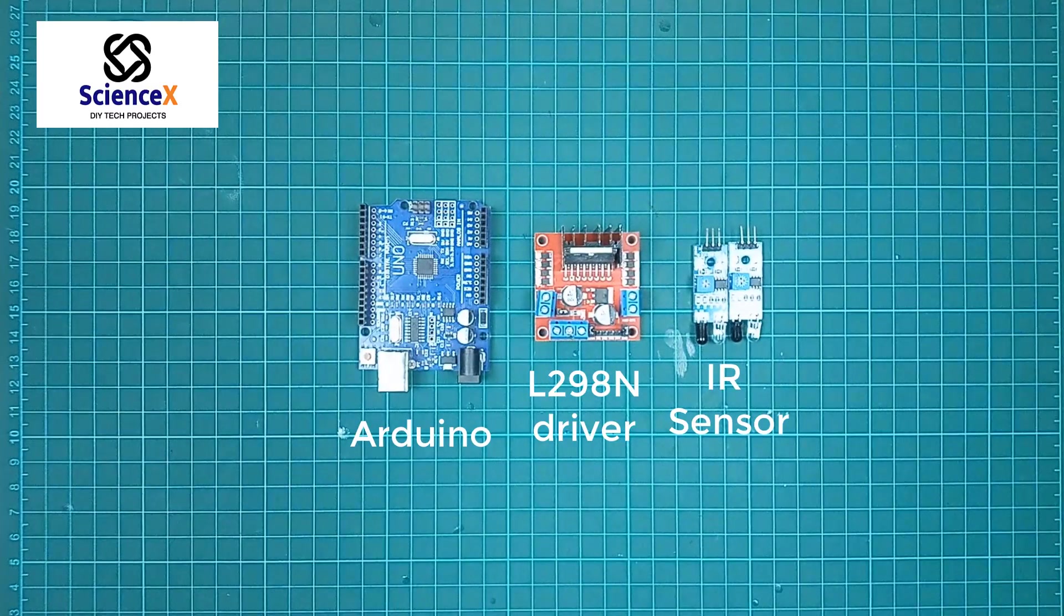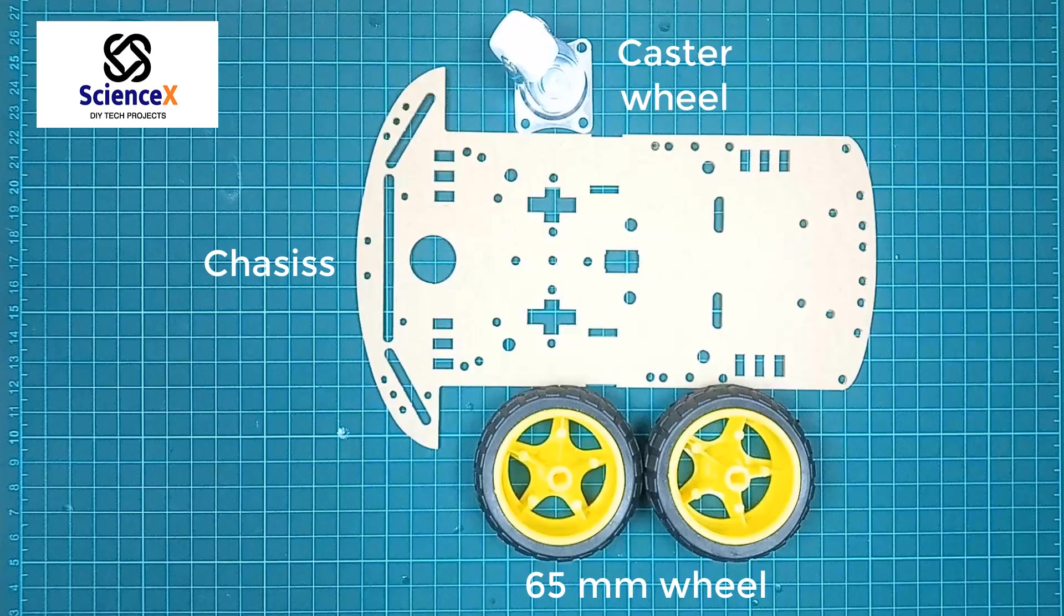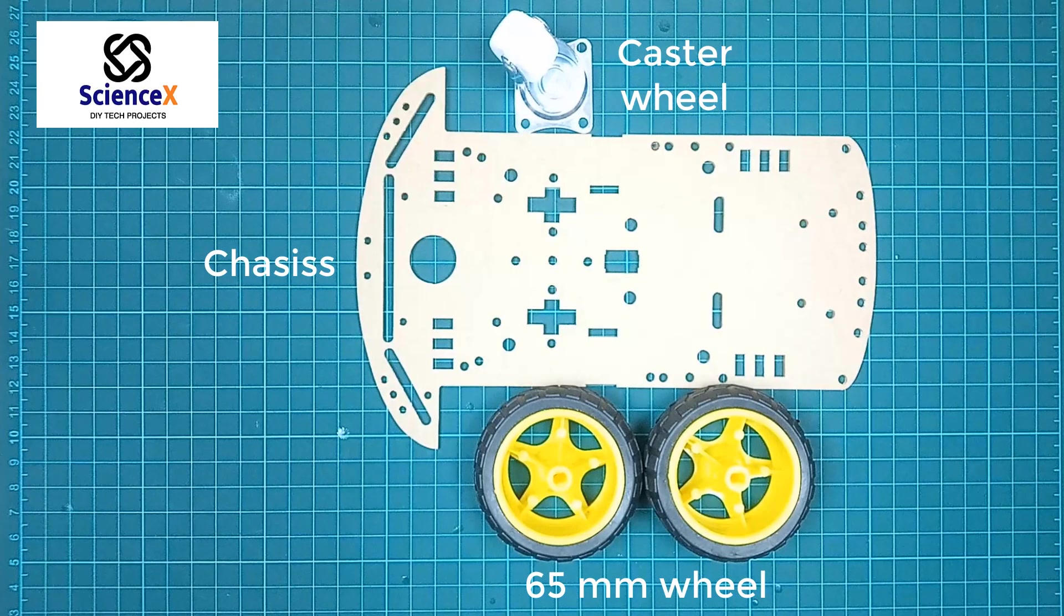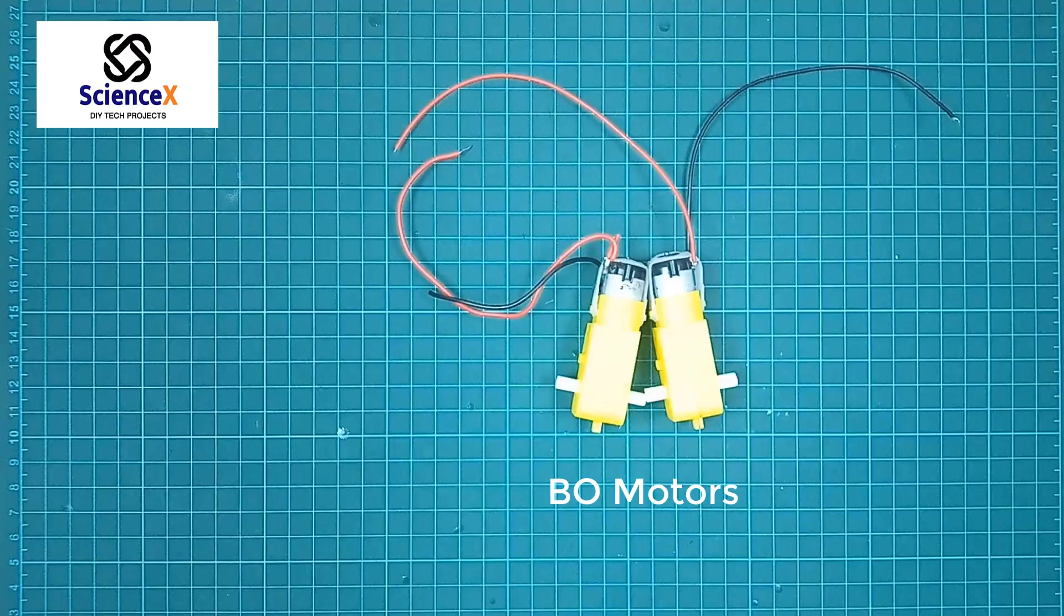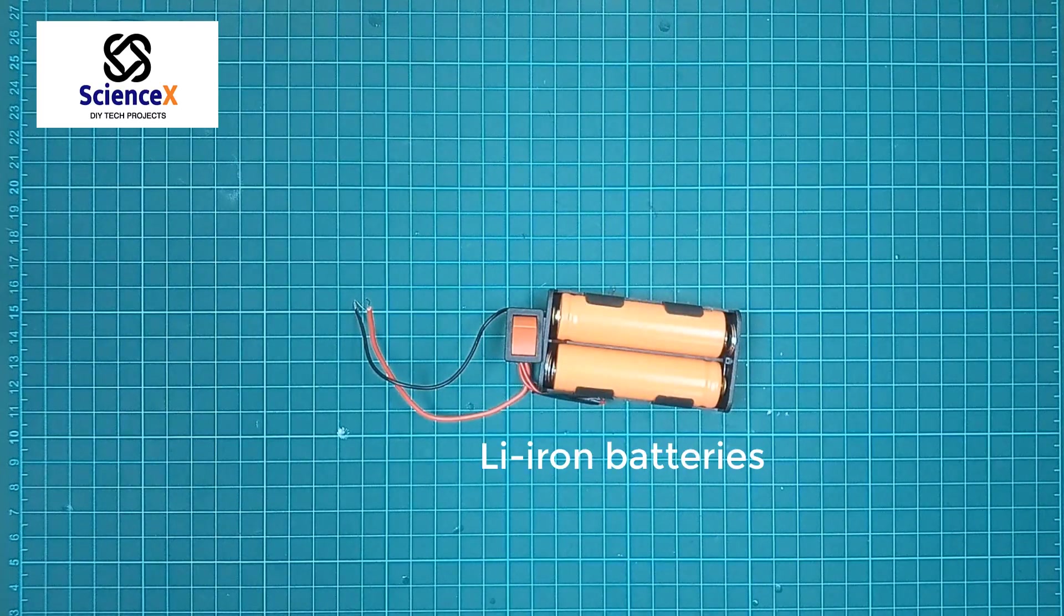First we will see the list of components. We need Arduino board and then one L298N driver and then two IR sensors. And we need one chassis and two 65mm wheel and one caster wheel. I am going to build two wheel robot today. Two motors I am going to use and one caster wheel. For that we need two BO motors and then lithium ion battery with the holder.